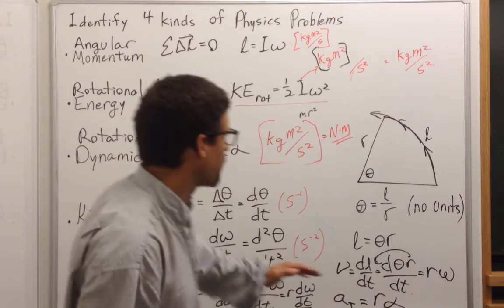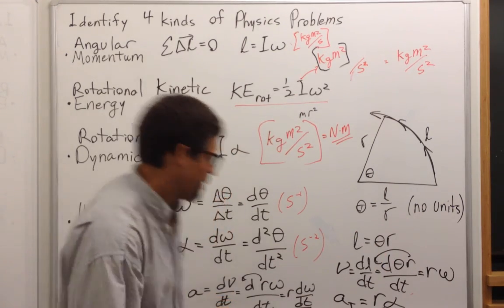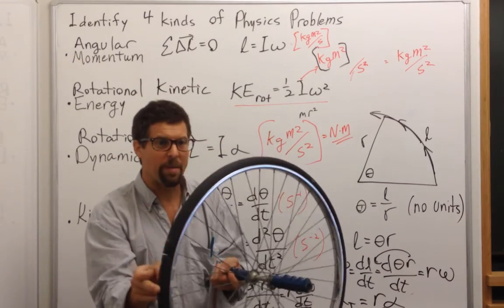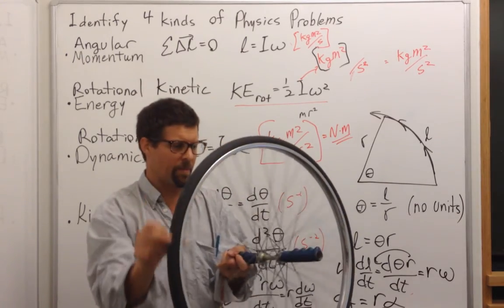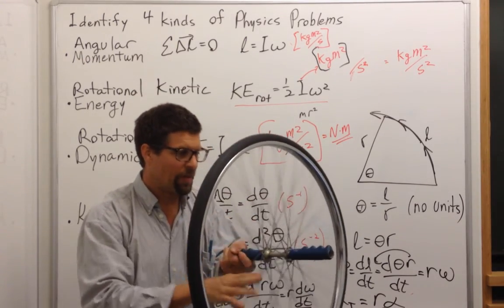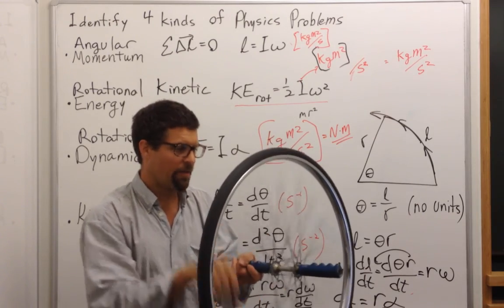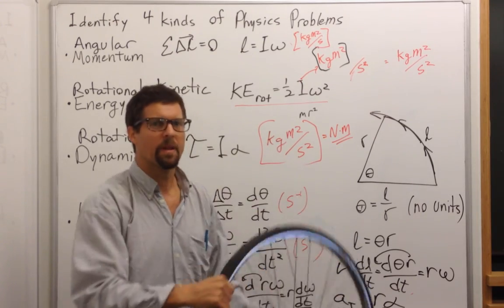And so we've gone through the units, and we've also described how the motion at the rim, the tangential motion of the rim, is connected to the angular motion of the solid body. Thank you.